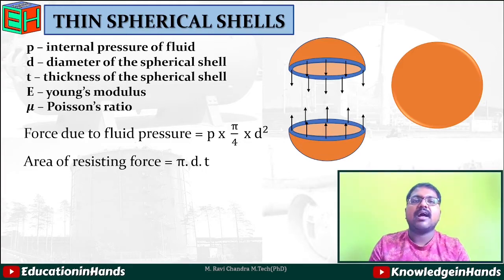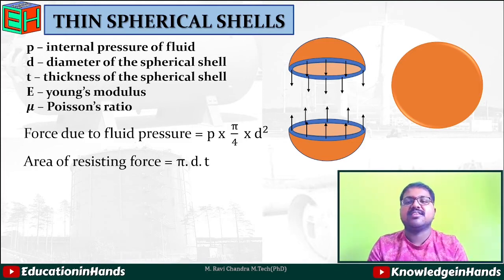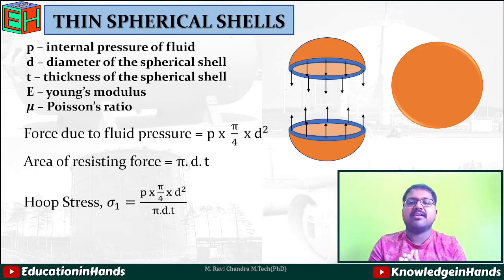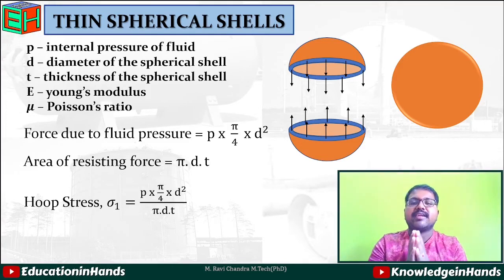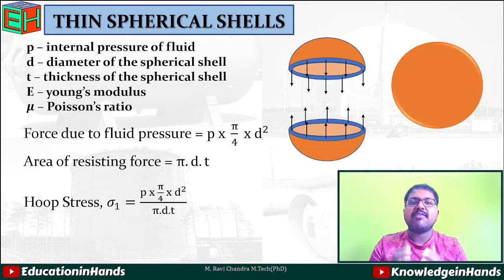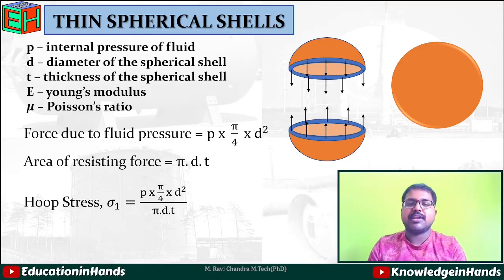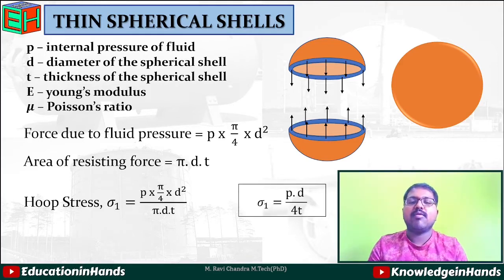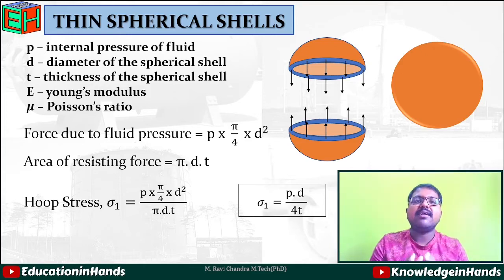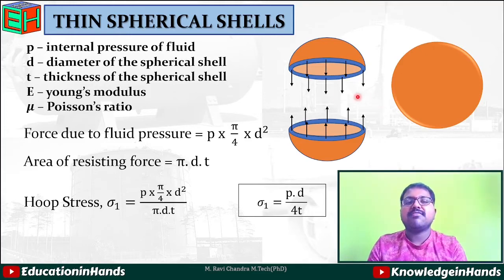To calculate the hoop stress or circumferential stress, σ₁ equals force divided by resisting area, that is p × (π/4)d² divided by π·d·t. If we simplify this, we get σ₁ = pd/4t. This is the formula for circumferential or hoop stress.